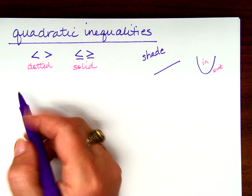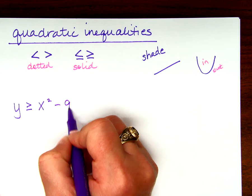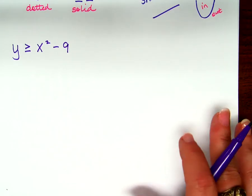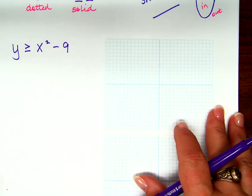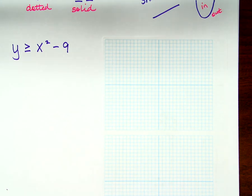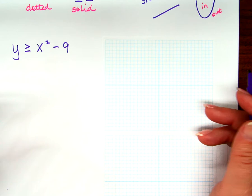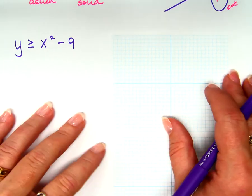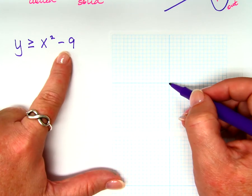So let's start here: y is greater than or equal to x squared minus 9. Sometimes when we graph, we just sketch a quick graph, and sometimes we plot exact points. We've got to plot exact points here, because we've got to know where to shade. We can use our transformation rules — where do I move this parabola from the origin? Down 9.